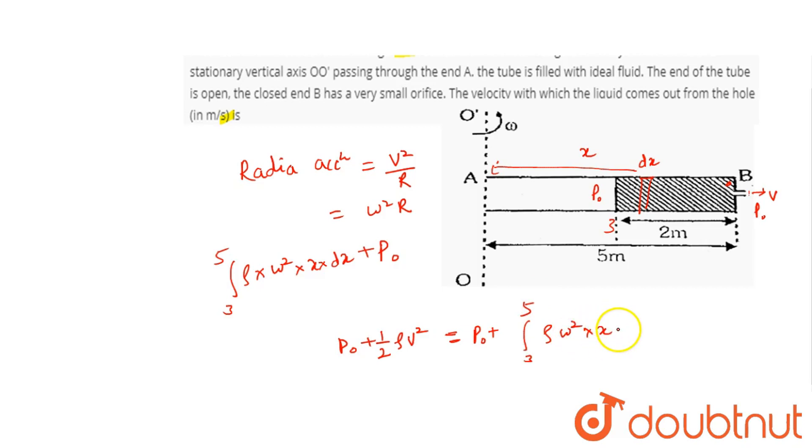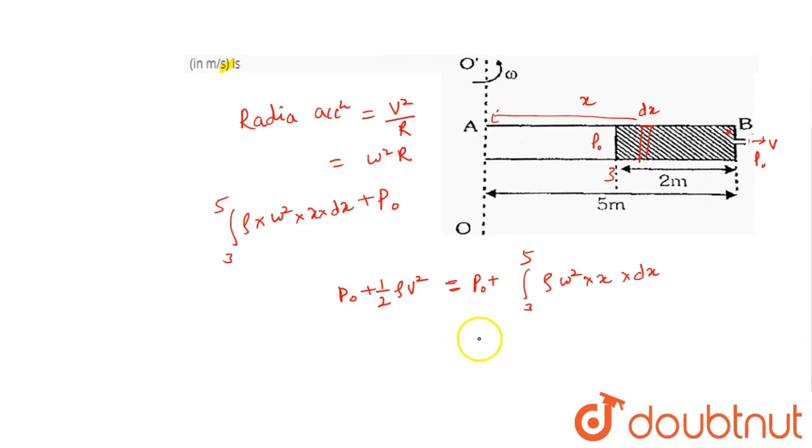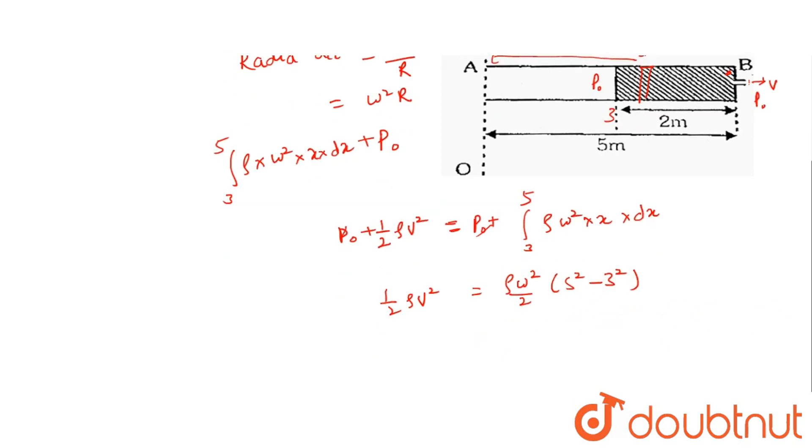Integration I'm carrying, DX. P not will be cancelled out. Okay, so half rho V square will be equal to rho omega square by two, X square by two, and 5 square minus 3 square.